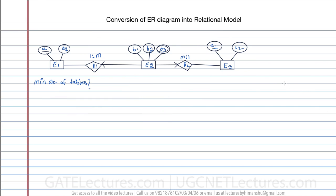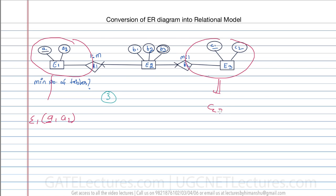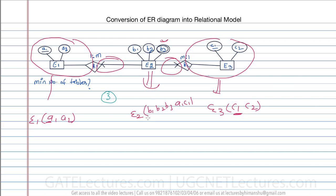In another example, find the minimum number of tables required. E1 and E3 have many cardinality so each gets its own table. E2 has maximum cardinality one in both directions, so it combines with both relationships, giving a single table with b1, b2, b3, a1, and c1 where a1 and c1 are foreign keys. The minimum number of tables required is three.